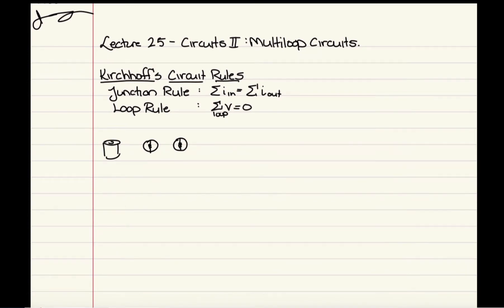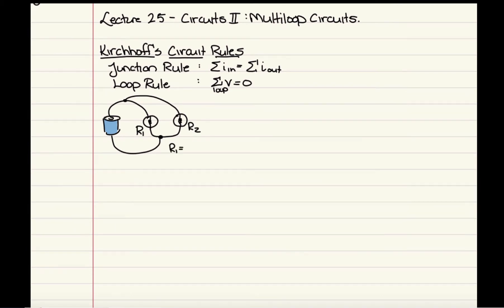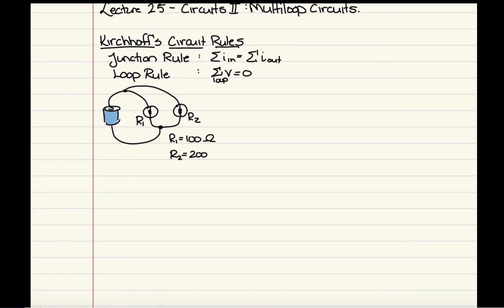So we have a battery and two light bulbs, and rather than connecting the light bulbs in series, we now connect them in parallel with one another. Let's suppose this is bulb one and this is bulb two, and I'm going to have the bulbs with different resistances. I'm going to take these resistances as constant to make things simpler.